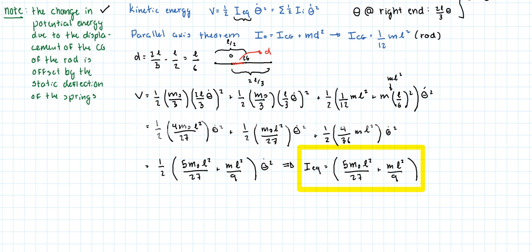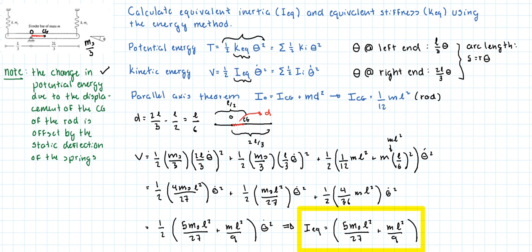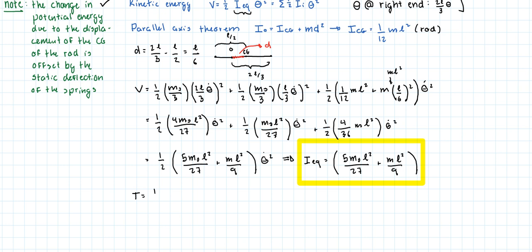We have the first spring and the second spring. Let's do the spring that is attached to the left: 1 half times its spring constant times its displacement, which is L over 3 times theta squared, plus the right-hand spring, which is K times 2L over 3 times theta squared.